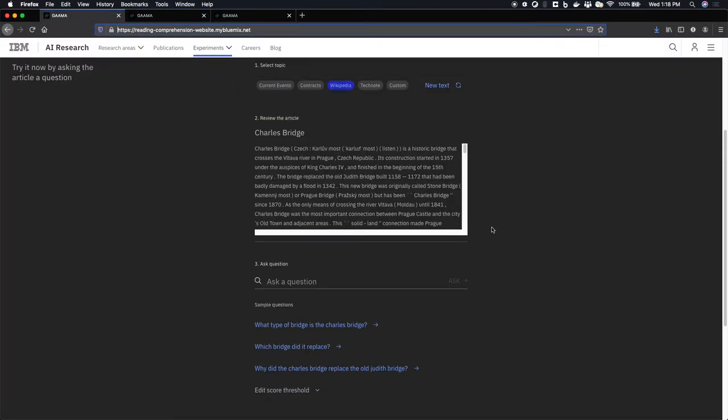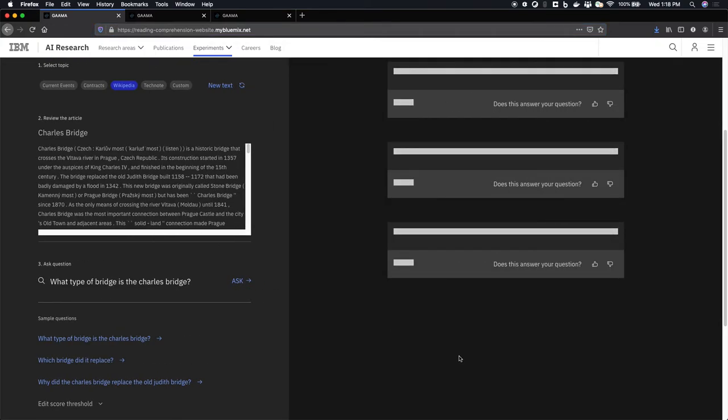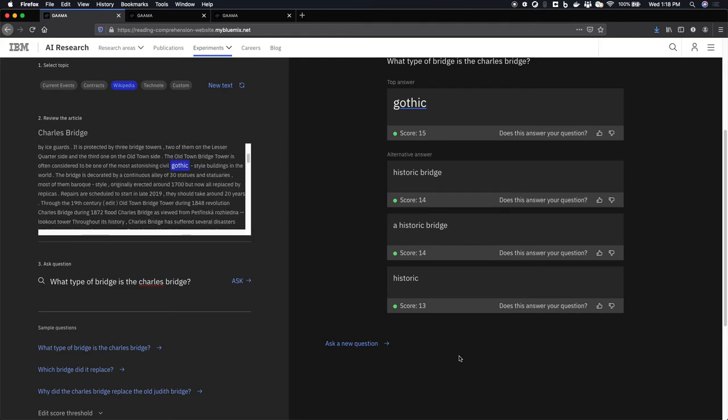Now we're going to take a quick look at the Gamma demo in action. For this first example, we have the Charles Bridge, a Wikipedia passage, and some questions. Here we're going to ask what type of bridge is Charles Bridge, and the system is going to respond that it is a gothic bridge.